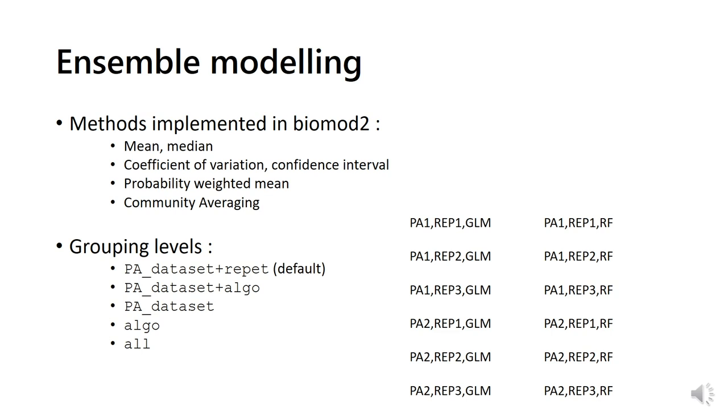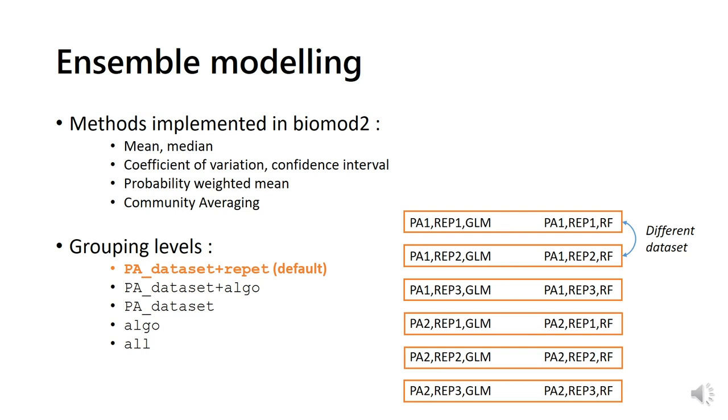For example, let's say that we build two pseudo-absence datasets and run two models, GLM and Random Forest, with three repetitions each. Then we can combine all of these models in five different ways to obtain ensemble models. The default combines together models with the same pseudo-absence dataset and repetition, meaning that the same points are used in all models for calibration and validation. The different models obtained if compared to one another can express the variability between the data used.